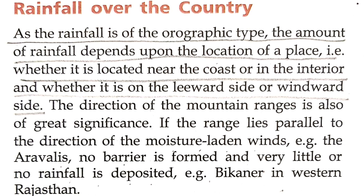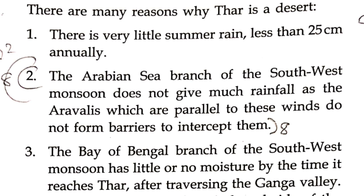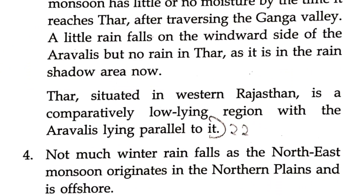For instance, if the range lies parallel to the direction of the moisture-laden winds — example: the Aravallis — no barrier is formed and very little or no rainfall is deposited. Example: Bikaner in western Rajasthan. The Arabian Sea branch of the southwest monsoon does not give much rainfall as the Aravallis, which are parallel to these winds, do not form barriers to intercept them. The Bay of Bengal branch of the southwest monsoon has little or no moisture by the time it reaches Thar, after traversing the entire Ganga valley. A little rain falls on the windward side of the Aravallis, but no rain in Thar desert as it is in the rain shadow area.